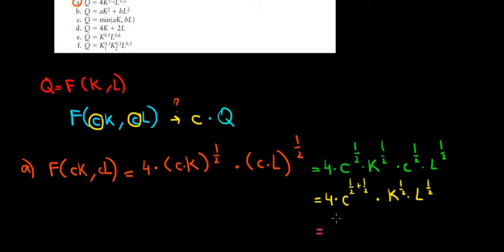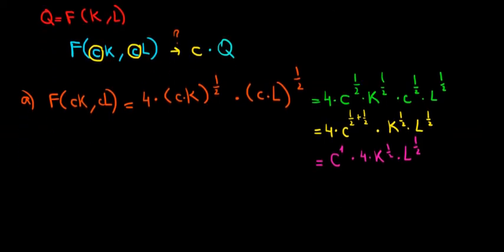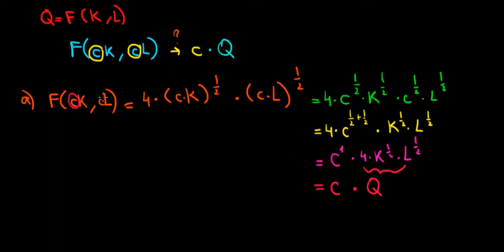So C to the power one-over-two plus one-over-two equals C to the power of one, multiplied with four times K to the power one-over-two times L to the power one-over-two. And four times K to the power one-over-two times L to the power one-over-two is our initial function. So increasing the inputs by proportion C gives us C times the initial production function — the output also increases by the constant C. That is an example of constant returns to scale: the increase in input equals the increase in output.